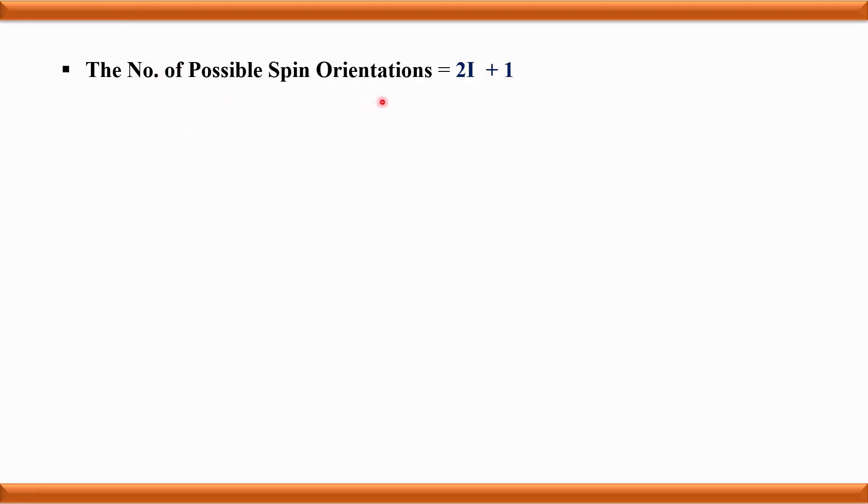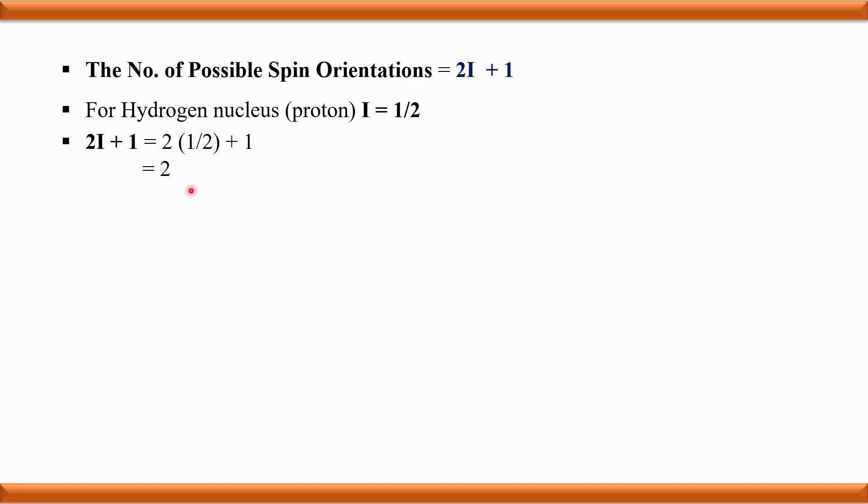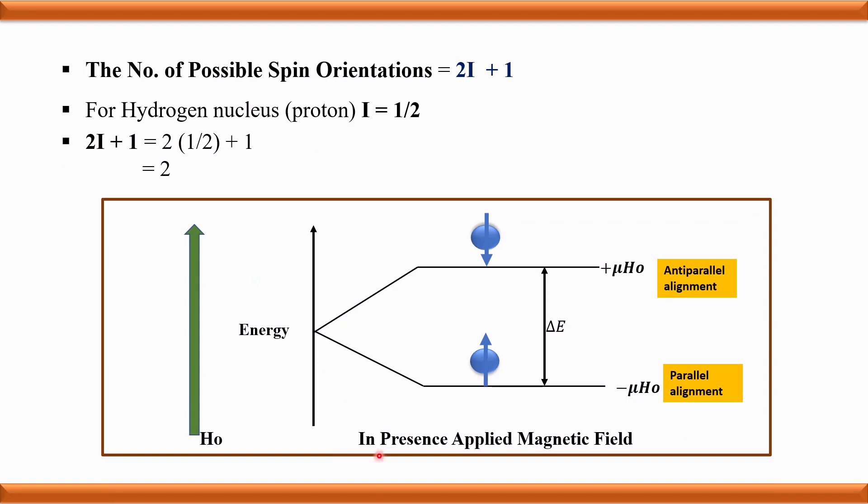The number of possible spin orientations is given by the formula 2I + 1, where I is the spin quantum number of the nucleus. In the case of hydrogen, the spin quantum number equals 1/2. Therefore, 2I + 1 equals 2, meaning the hydrogen nucleus has two possible orientations when placed in an applied magnetic field.